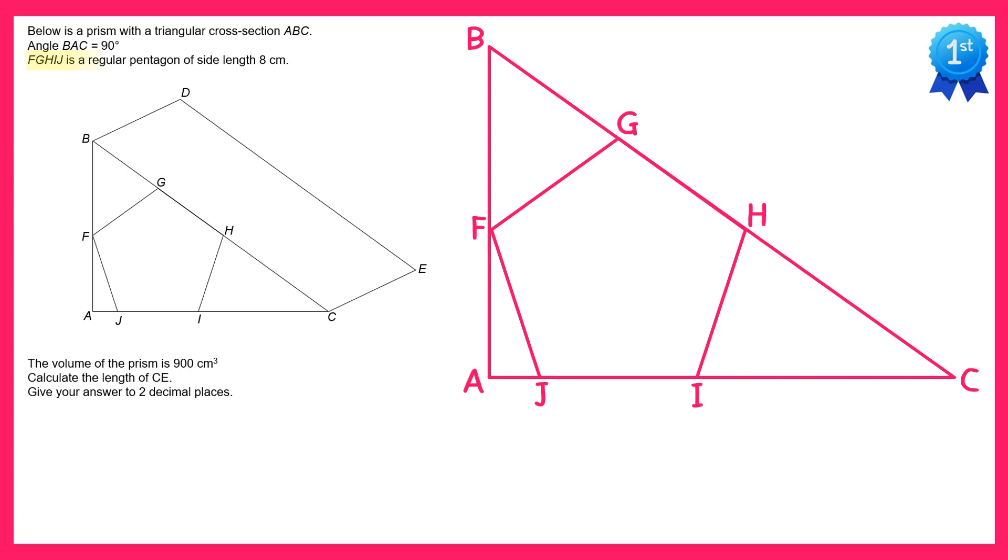We're told in the question that there's a regular pentagon on there with side length 8cm, so we can label all of the sides of that pentagon 8cm. Now since the pentagon is regular we also know the size of all of the interior angles, they're 108 degrees.